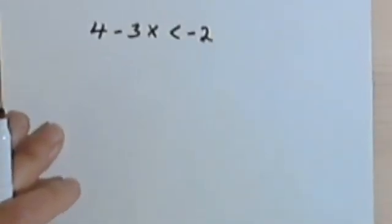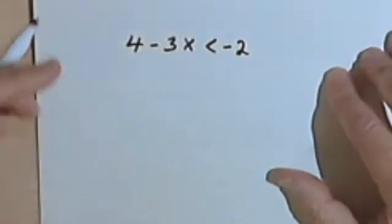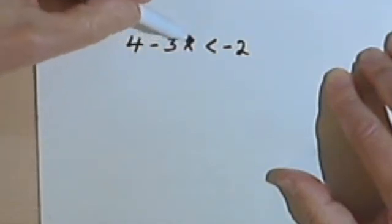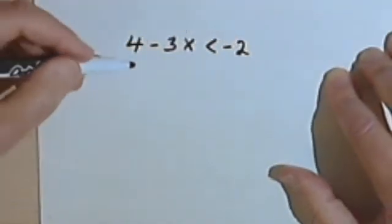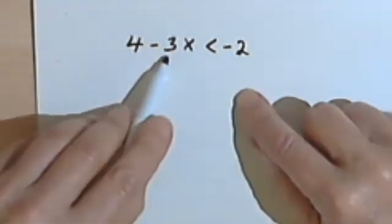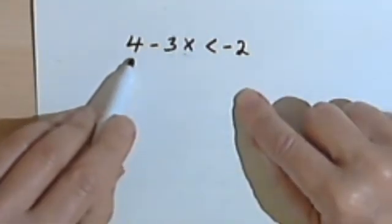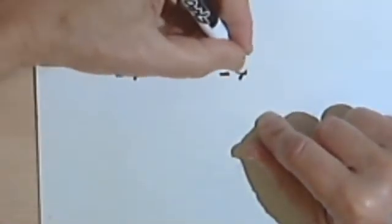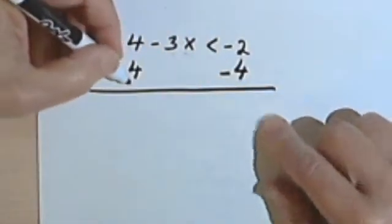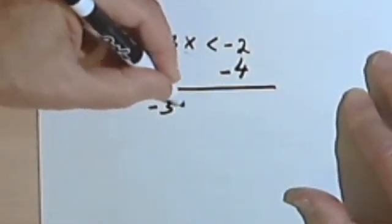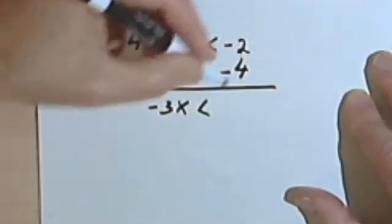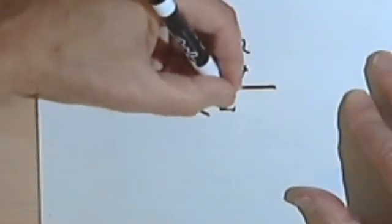Now, there is one place we have to be careful, and we can see that in this problem. Here I have 4 minus 3x is less than negative 2. Once again, I'm thinking I want to get the x by itself. I'll start by getting rid of the 4 on the left side, so I'll subtract 4 from both sides. That's going to give me negative 3x on the left. I've still got my less than sign, and negative 2 minus 4 is negative 6.